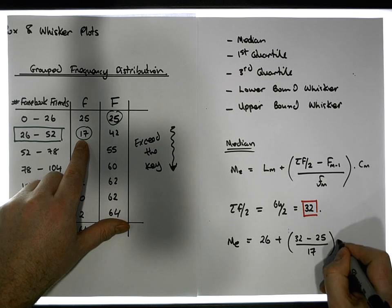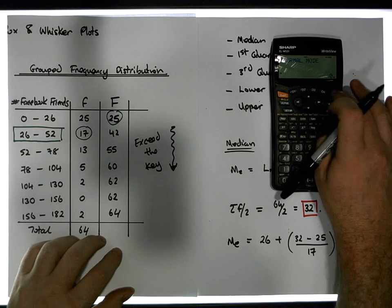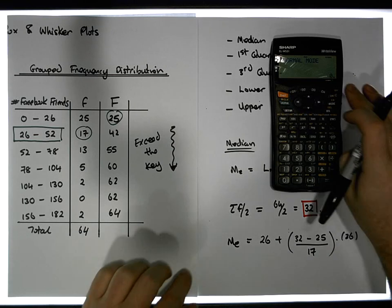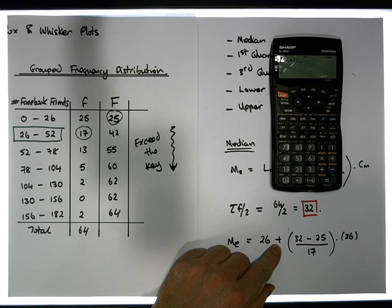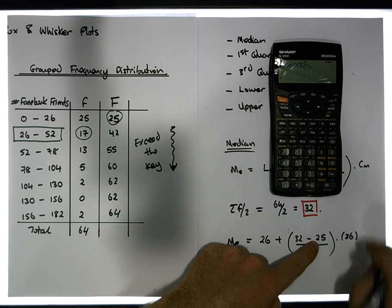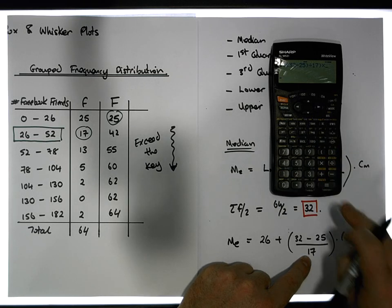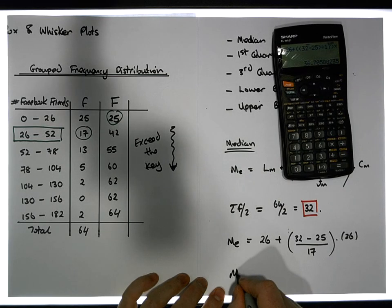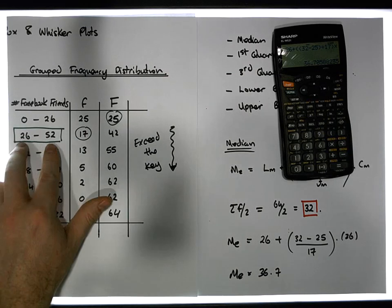That needs to be multiplied by the class width, which is 26. I'm going to do that on my calculator all in one go, because this video is all about doing the five-point statistic summary, which is the box-and-whiskers plot. So: 26 plus, with double brackets, 32 minus 25, all divided by 17, then multiplied by 26 — which gives us a value of 36.7. So the median is equal to 36.7, which is in this interval.